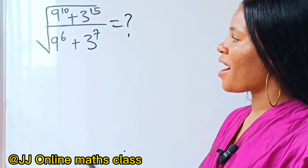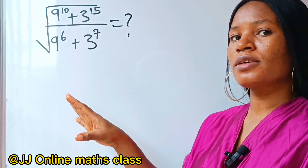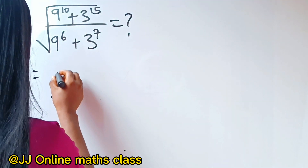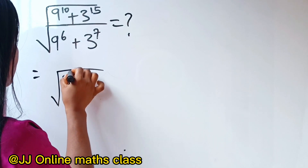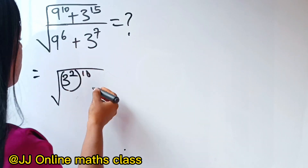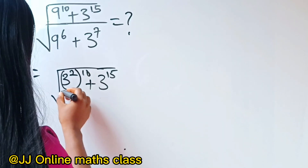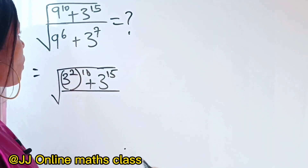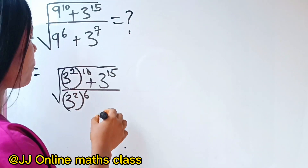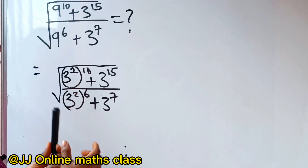Welcome back, my lovely viewers. Today we are asked to solve this. The first thing we need to do is make sure we put everything in the same base. Square root of 9 can be written as 3 to the power of 2, bracket 10. This is already in base 3, so we don't need to touch it. 9 can be written as 3 to the power of 2, plus 3 to the power of 7.